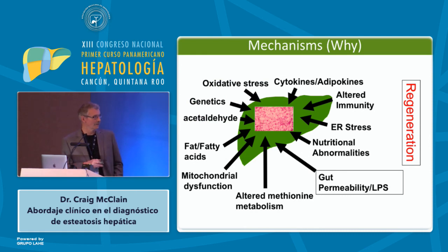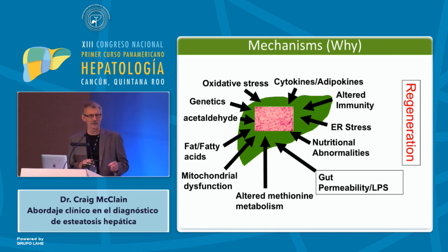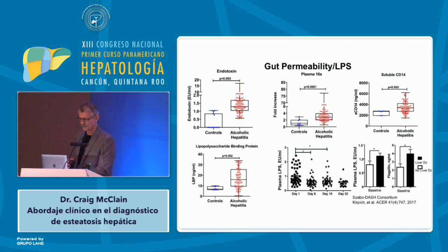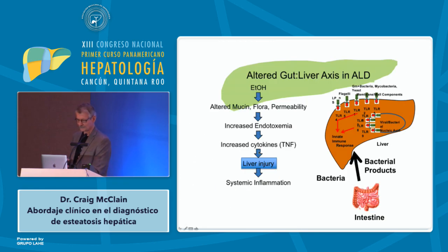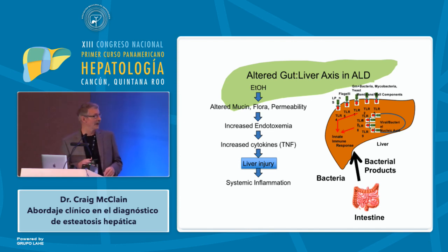What are the mechanisms? We'll focus on one type today: altered gut barrier function — something you've heard a little about from other speakers. These are mechanisms of cell injury. What we've ignored too much is liver regeneration in this disease process. Our scheme of altered gut barrier function has been our hypothesis since the mid-1980s: that alcohol causes altered gut flora, altered mucin, altered gut permeability, leading to increased cytokine production and subsequent liver injury.